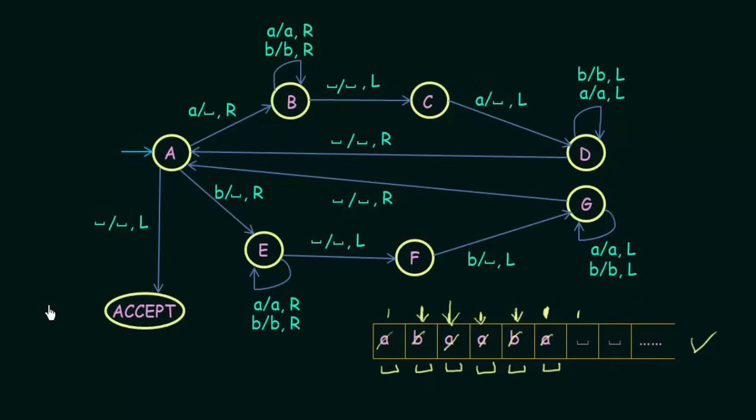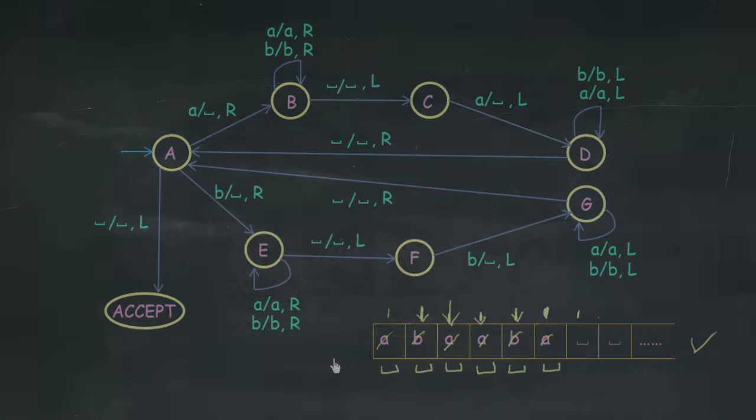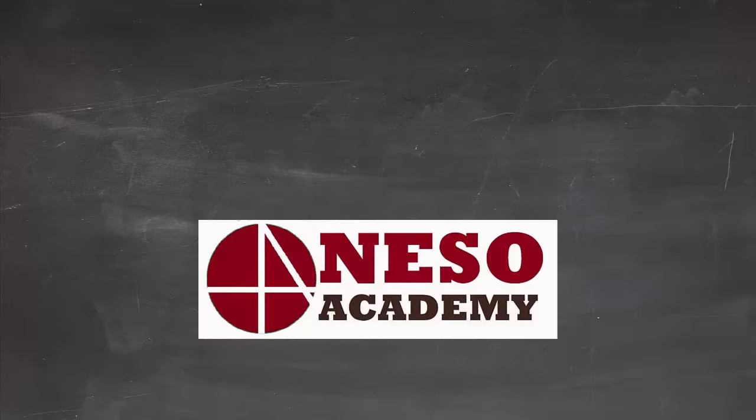That is how this Turing machine for even palindromes works. You check the first symbol against the last, the second against the second-to-last, and so on. If you can replace everything with blank, the string is accepted; otherwise it is rejected. I hope that was clear. Thank you for watching and see you in the next one.